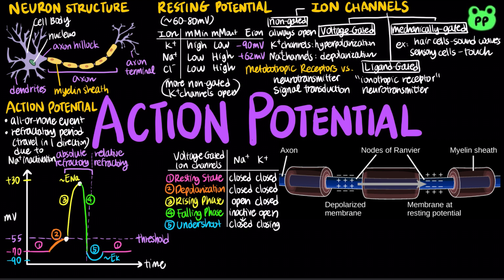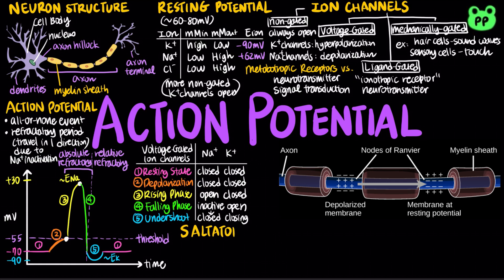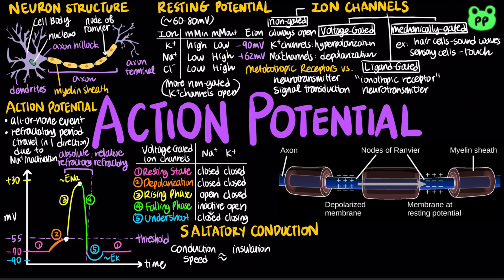Action potentials in myelinated axons jump between nodes of Ranvier in a process called saltatory conduction. The speed of an action potential correlates with the degree of insulation by myelin sheath, as well as with the increase of an axon's diameter.